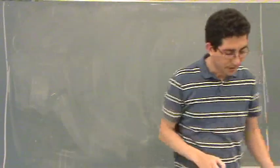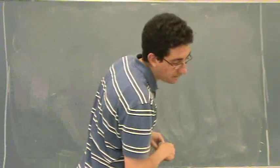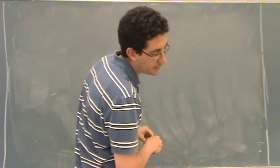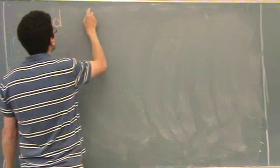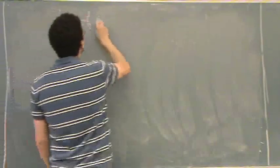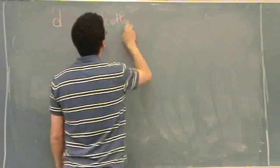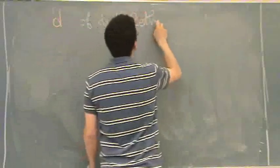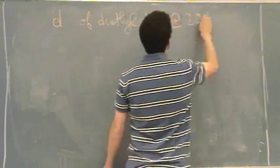Okay, so what did I say? Page 480, okay? 2B. So we want the density of diethyl ether at 20 degrees C.